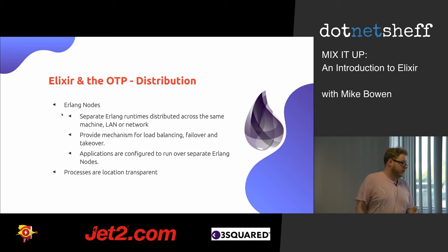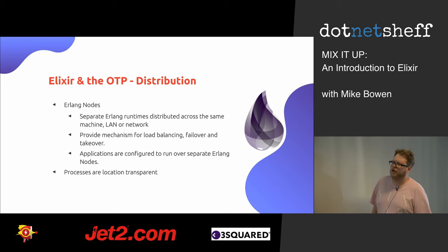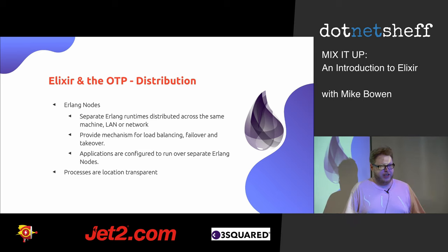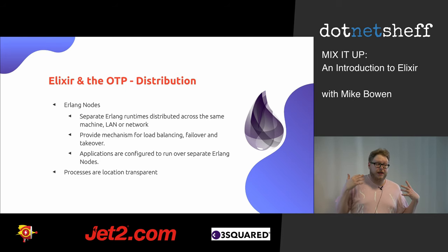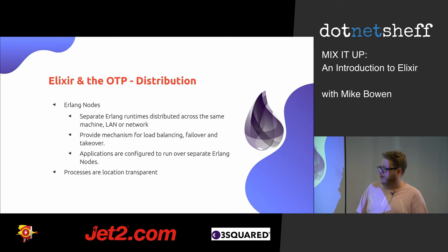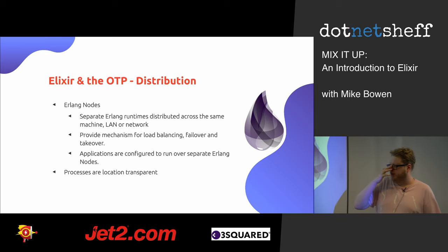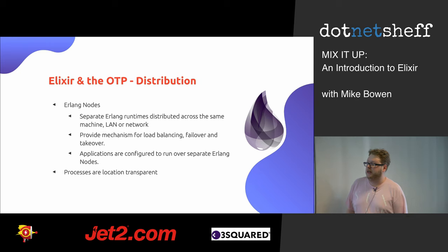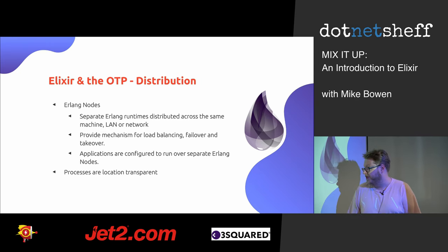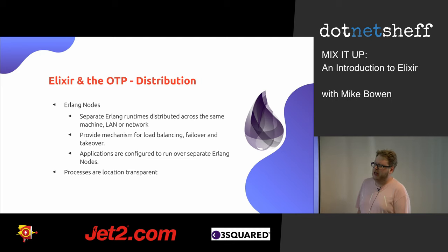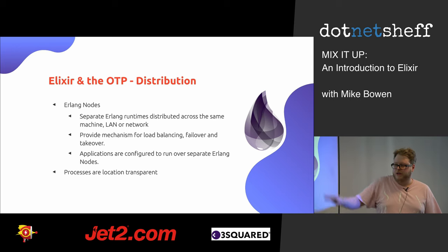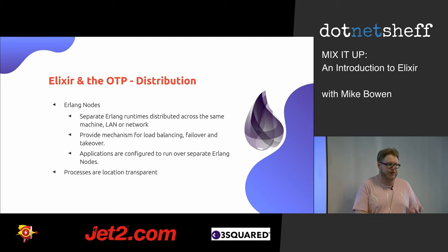Elixir can be distributed. We have a concept called Erlang nodes — basically a separate Elixir runtime. You can run as many as you want on the same computer, same LAN, or another machine on the network. They provide the mechanism for spreading your processes across the network for load balancing or, in more advanced scenarios, failover and takeover — one node goes down, another comes up to run the process for you. Processes are location transparent: even if a process is running on a machine somewhere else, as long as you have the ID of that process, you can just send a message to it — no other ceremony involved.